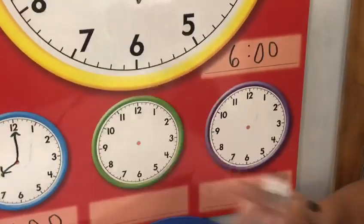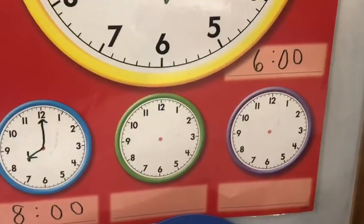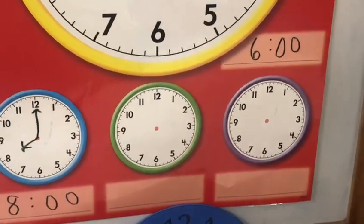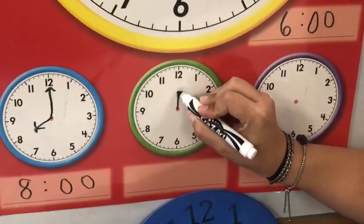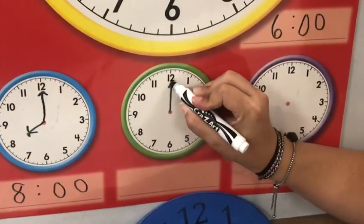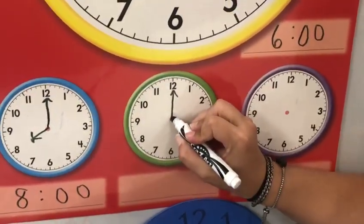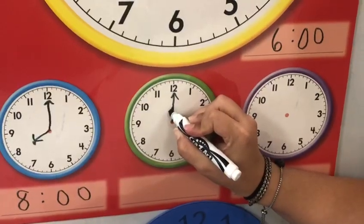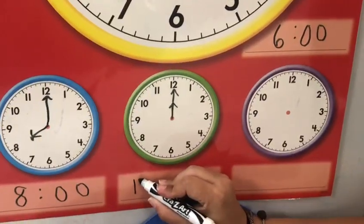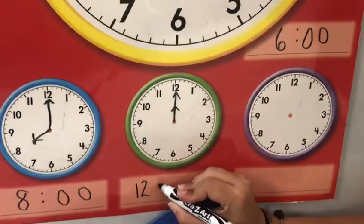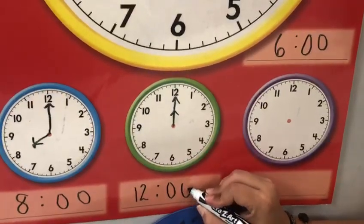And the green one is gonna be the time for lunch. At what time we can have lunch? At 12 — 12 is a good hour to have lunch. So let's put the big arrow on the clock, that is 12. And this time the little arrow is gonna be also at 12, because it's 12 o'clock. And this means 12 o'clock.